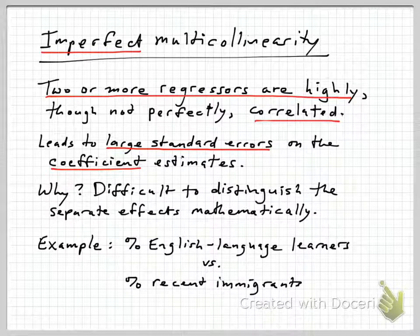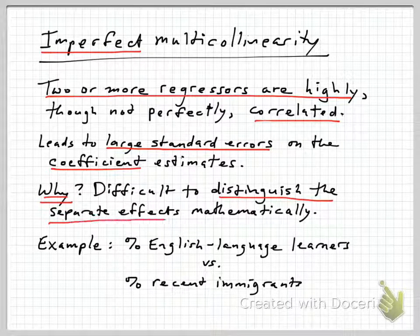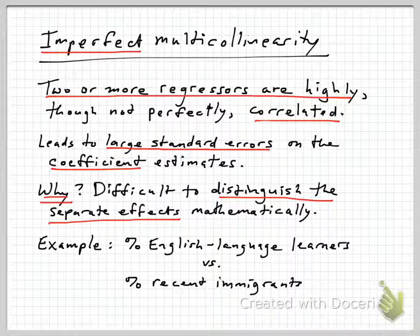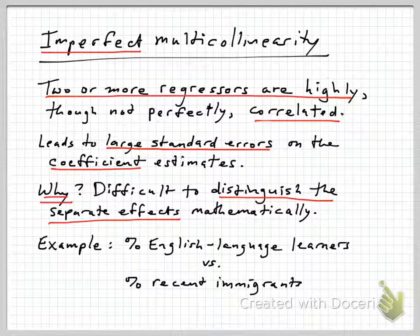There are mathematical reasons this happens, but intuitively, think about what the regression is trying to do. The computer is trying to distinguish the separate effects of two x variables that are very highly correlated with each other — it's almost like they're measuring the exact same thing. In that case, sorting out the individual contribution of the separate variables becomes mathematically challenging, and as a consequence the estimates are going to be very imprecise.